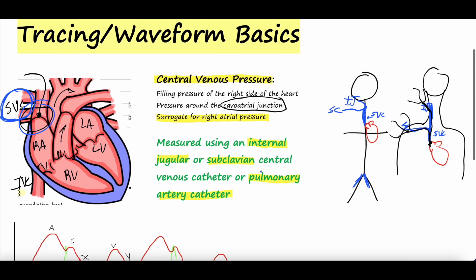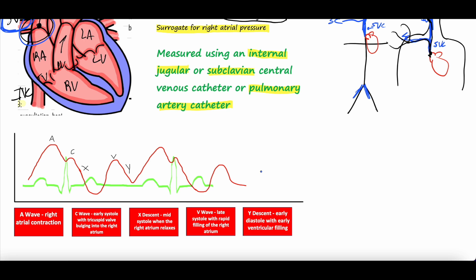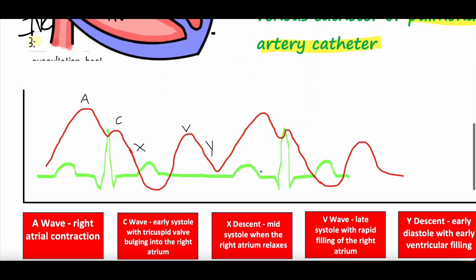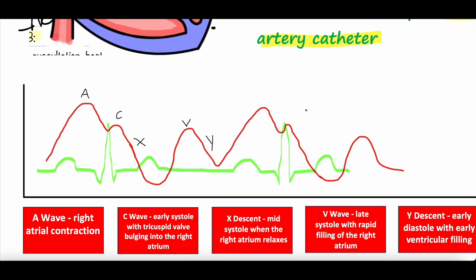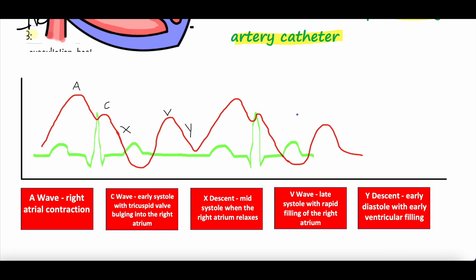One of the benefits of CVP is the waveform tracing, because it can tell you about what might be going on. But to understand it, you have to know what a normal central venous pressure tracing looks like. This catheter measuring the CVP sits right at the cavoatrial junction, where the superior vena cava meets the right atrium, and the pressure it experiences is a product of the cardiac cycle. The red line is the CVP tracing or CVP waveform.